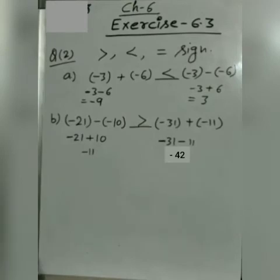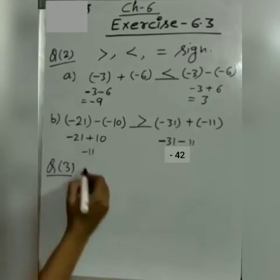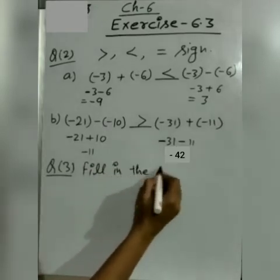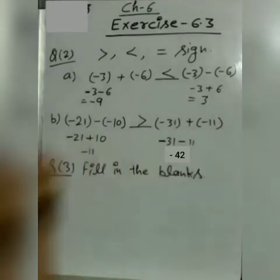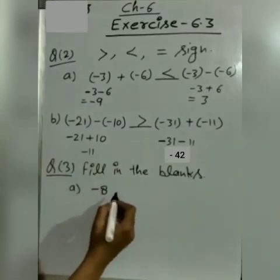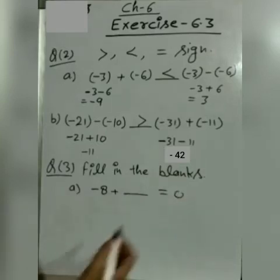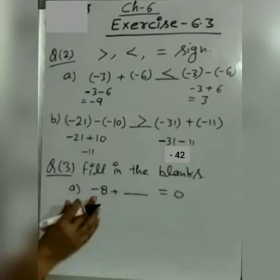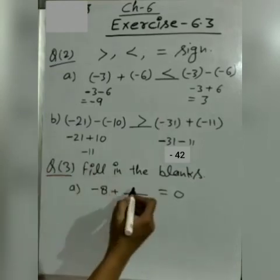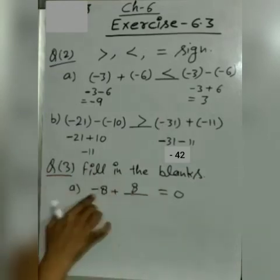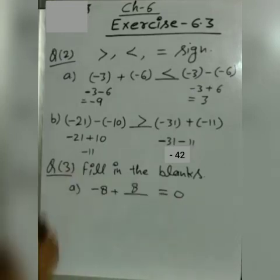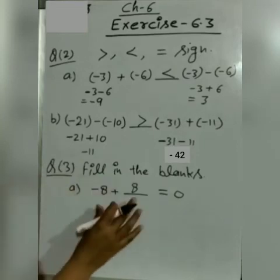Now question number 3, fill in the blanks. Minus 8 plus dash equal to 0. So what will we add to minus 8 to get 0? Simple. Minus 8 plus 8, the additive inverse of minus 8 is 8. So here we will write plus 8.